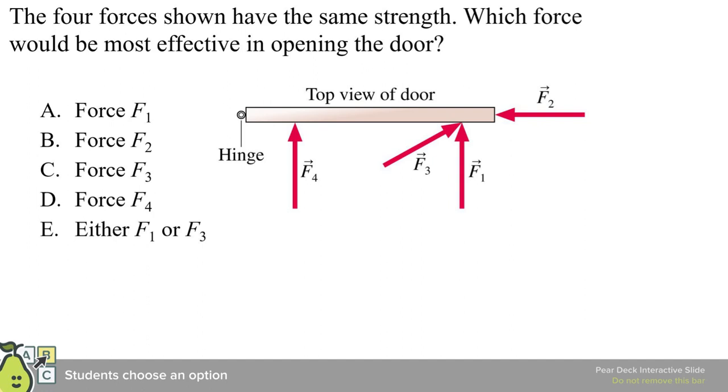Hopefully, your experience will tell you something like, it's not this one, because the one further away would be better. Pushing close to the hinge is less effective than pushing further away from the hinge. On the other hand, it's actually not going to be this one either, even though it is further away, because you're not pushing the door to the side. It doesn't tend to spin, it doesn't tend to open in any way.